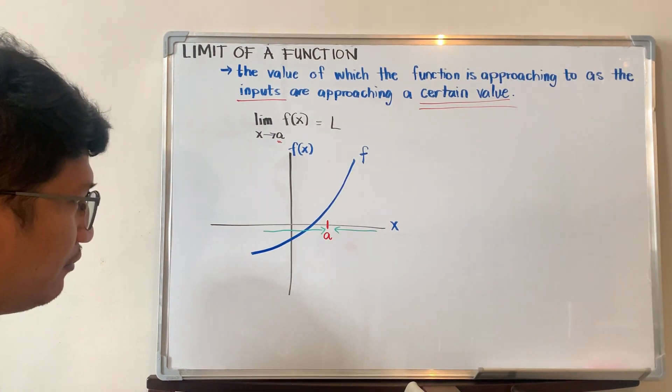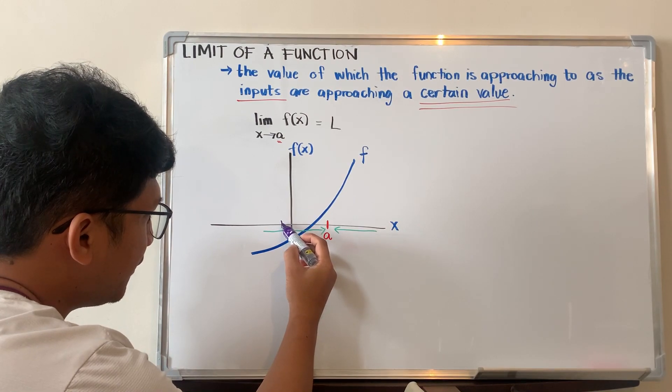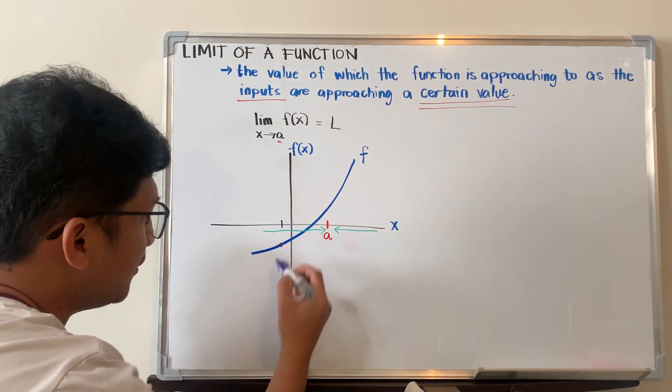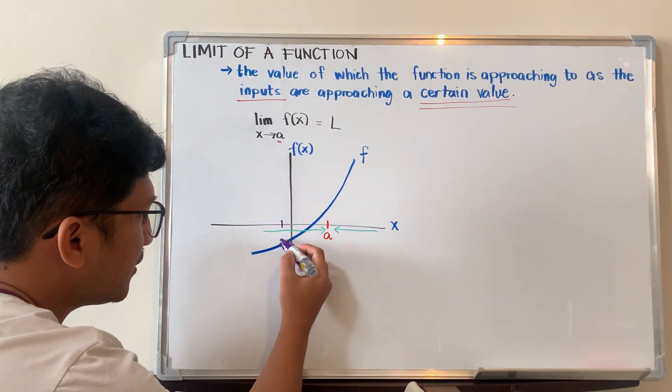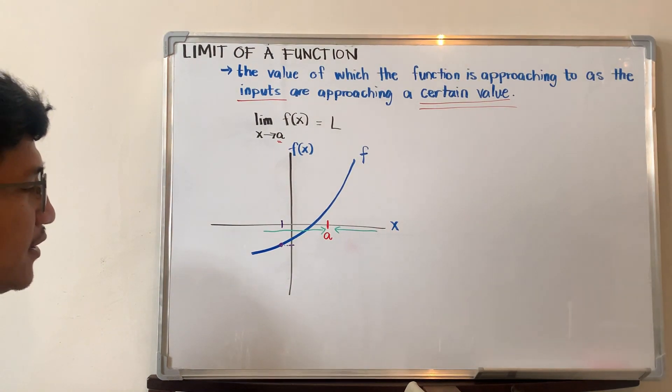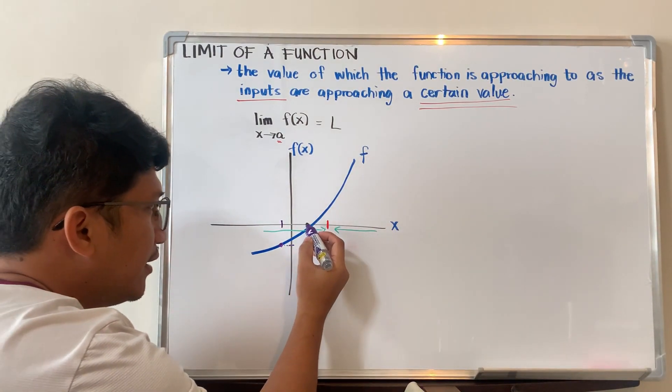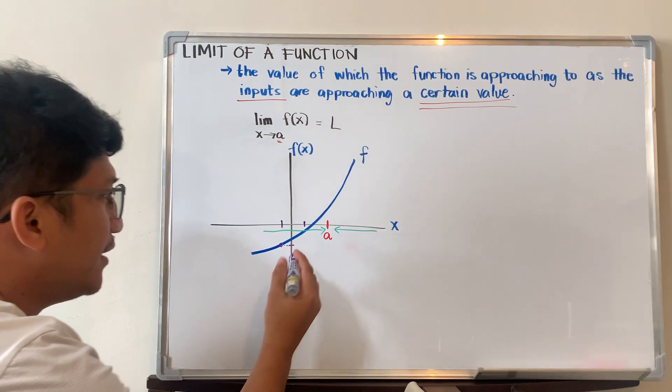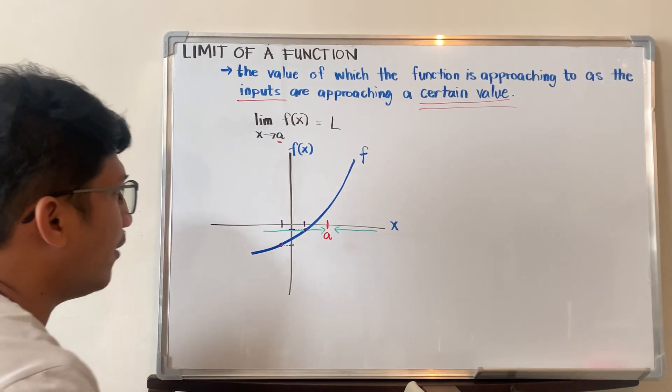What will happen when it's approaching to a? Let's have this example. If this is the value of x, the first value of x here on the left, it represents a certain point here on the function. As we know, every point of the curve is represented by an x and y coordinate. So we have the first x value, and we have the y value, or the f of x.